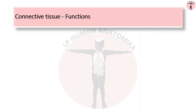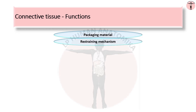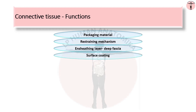Coming to the functions of connective tissue: it acts as a packaging material and provides a supporting matrix for many highly organized structures. It forms restraining mechanisms of the body in the form of retinacular check ligaments and fibrous pulling. The ensheathing layer of deep fascia preserves the characteristic contour of the limbs and aids circulation in the veins and lymphatics. It provides surface coating of the body in the form of superficial fascia, which stores fat and conserves body heat.